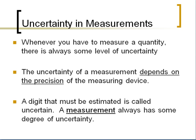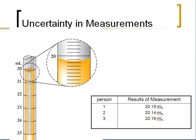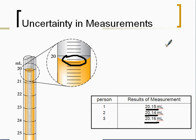Here we have a graduated burette, and three different students took three different measurements of the liquid level. We know for sure that it's 20.1, but when you get to this zone right here, we're not quite clear what's in between — it's not 20.2, it's not 20.1, it's somewhere in the middle. Person one wrote 20.15, person two 20.14, and person three 20.16.